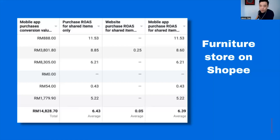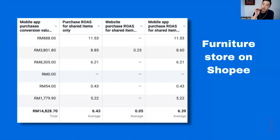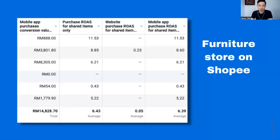Overall, for the entire campaign period of about one to two months, they achieved 6.39 ROAS — definitely a profitable campaign. So if you're struggling to form a strategy that works best for your business or to get positive ROAS, this two-step funnel is something you probably want to implement.